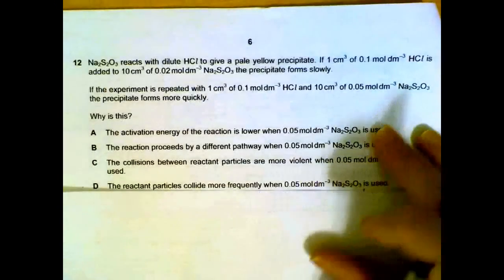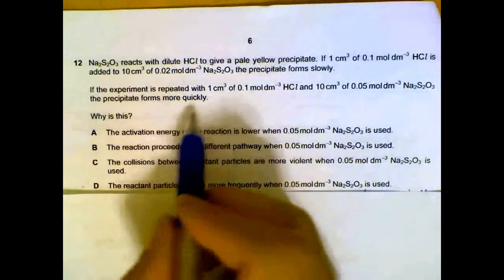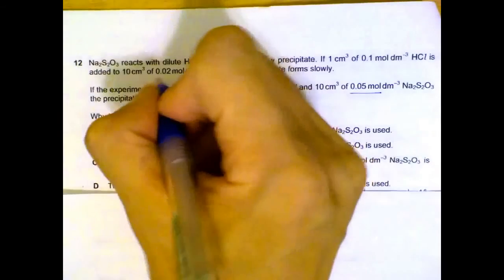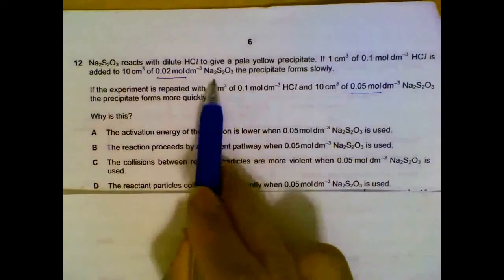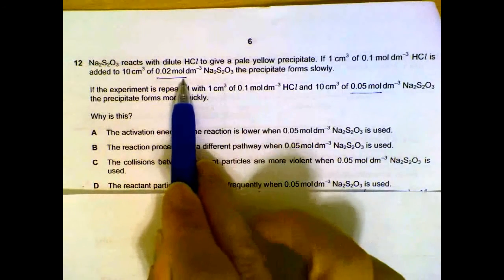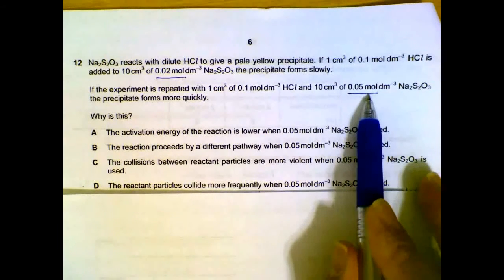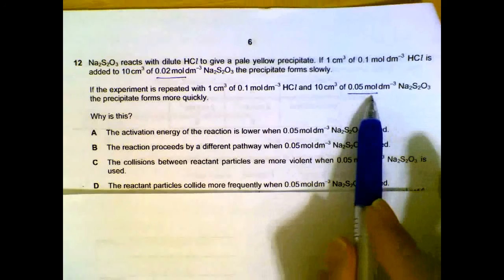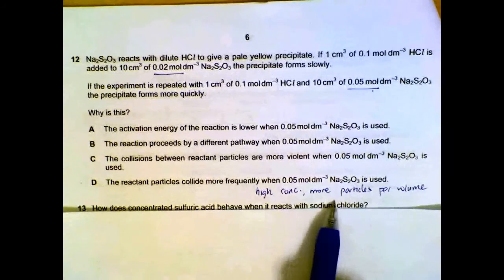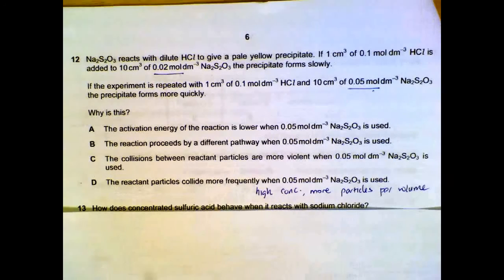Number 12. We have 2 reactions, and the difference between the first reaction and the second reaction is the concentration of your thiosulfate. We have 0.02 moles per dm³ at the start, and then the second time we use 0.05 moles per dm³. So we have a higher concentration for the second experiment. It will mean that we have more particles per volume. That will allow the particles to collide more frequently.